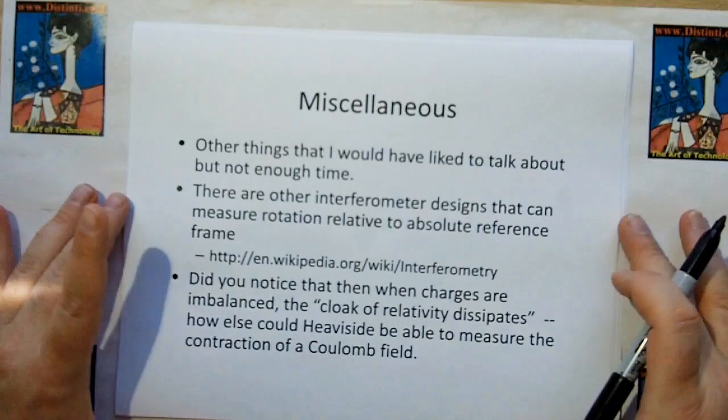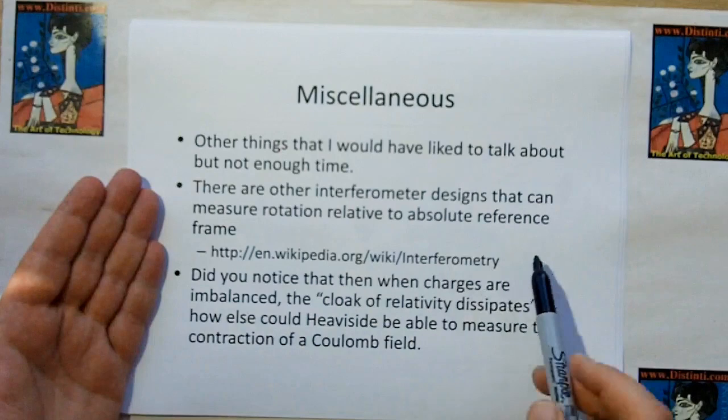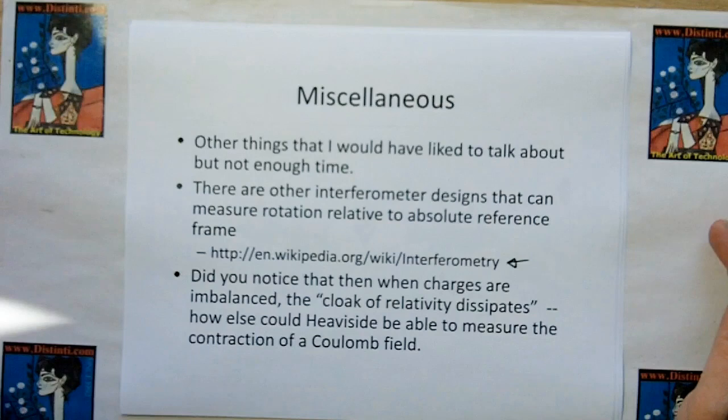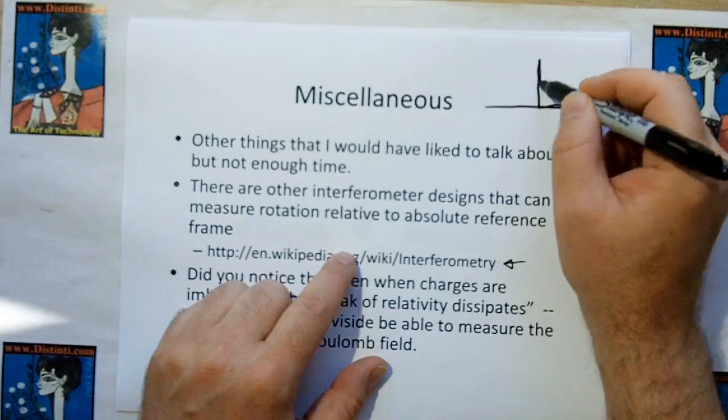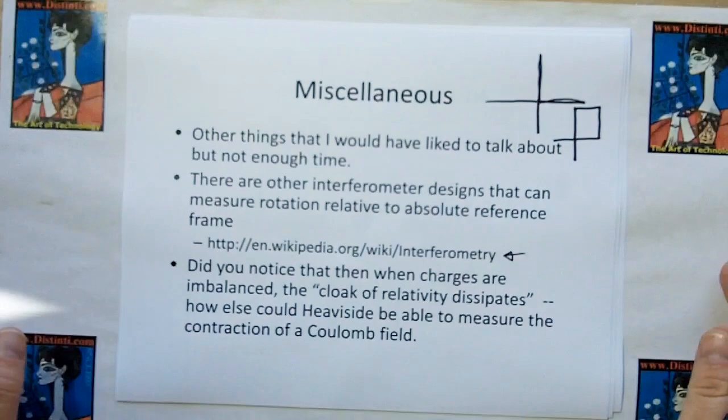There are other interferometer designs that can measure rotation relative to the reference frame — called open area interferometers. A fiber optic gyroscope is based on that principle. In the regular Michelson-Morley interferometer there's no area between the beams, but if you make the beam go around a circle and come back, you have open area, and that gives you your velocity in rotation. So you can detect rotation relative to the medium.